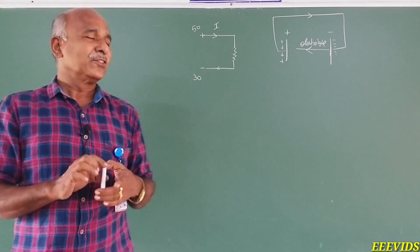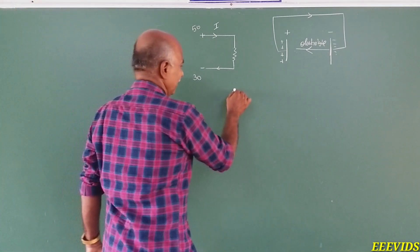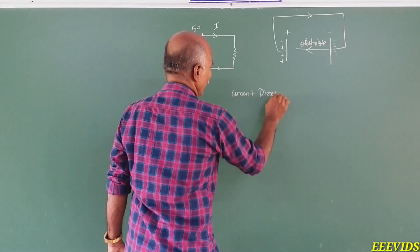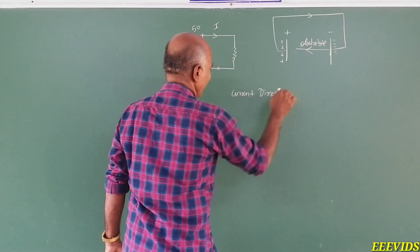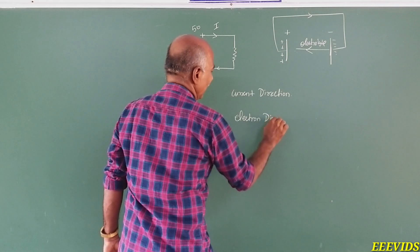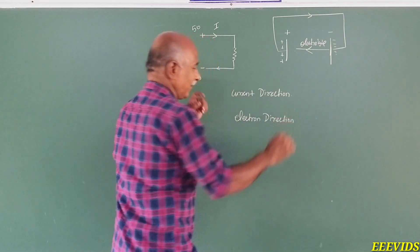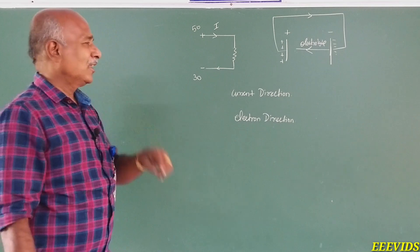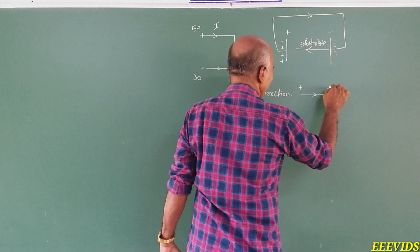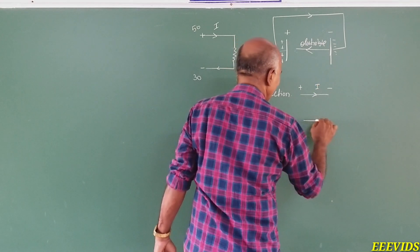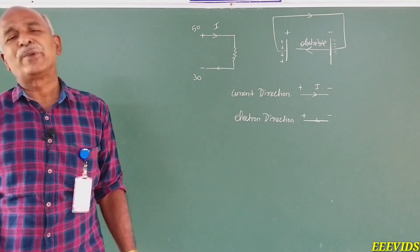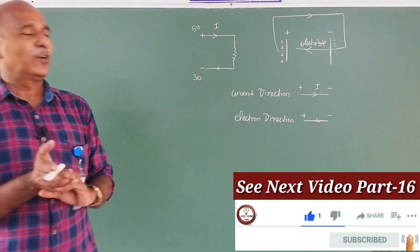So this is the current direction and the electrons movement — there are two directions. In electrical circuits, we discover two directions: one is current direction, and another is electron direction. Current direction goes from plus to minus, and electron direction goes from minus to plus.